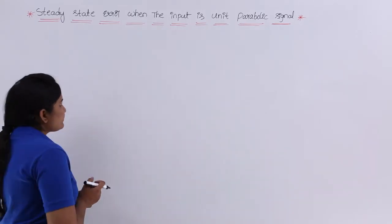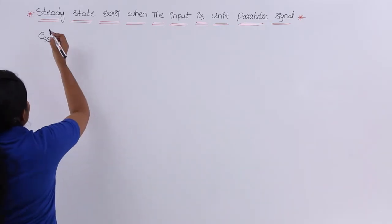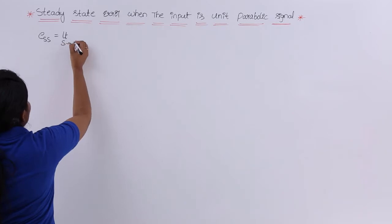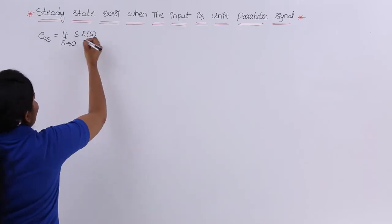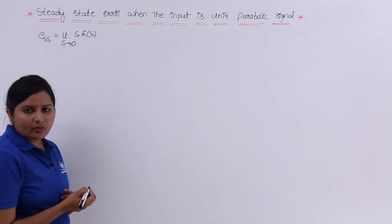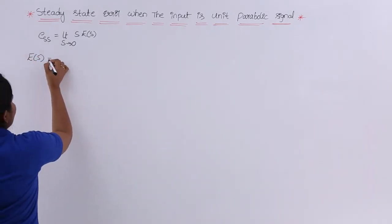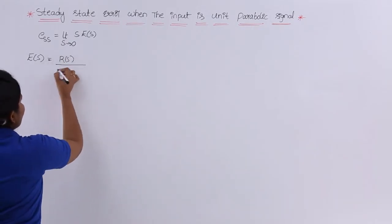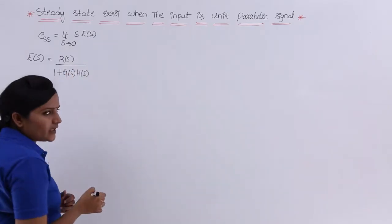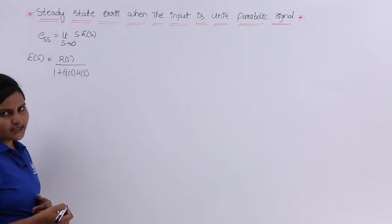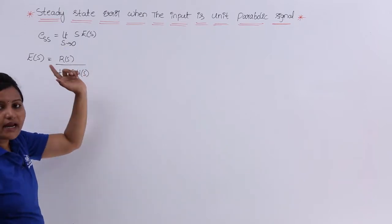We already covered the topic related to steady state error. Steady state error can be calculated using the formula according to the final value theorem: limit s tends to 0 of s·E(s), where E(s) is the Laplace transform of the error signal e(t). We already know the equation for E(s): E(s) = R(s) / (1 + G(s)·H(s)). For how these two equations were derived, refer to the previous video on steady state error.